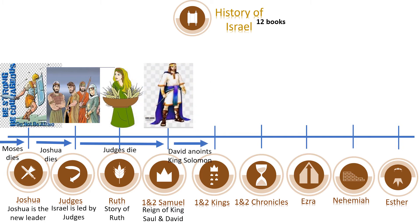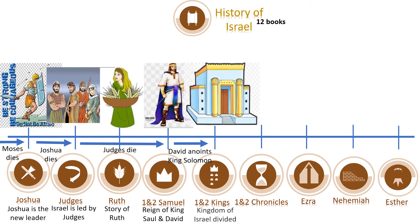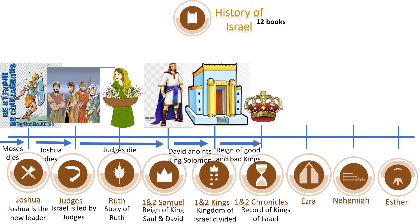The books of Samuel end with the wonderful reign of King David. As David grew weak, he appointed his son Solomon as king. King Solomon was the wisest king and he built a beautiful temple as a place of worship for God. However, after him the kingdom of Israel gets divided into northern and southern kingdoms, with good and bad kings — all recorded in 1st and 2nd Kings. The books of 1st and 2nd Chronicles record the events from 1st and 2nd Samuel and 1st and 2nd Kings.